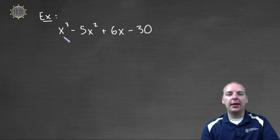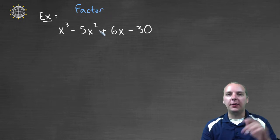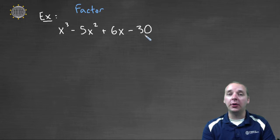Here we're being asked to factor this big polynomial. The first thing I notice is that it has one, two, three, four terms. So immediately I'm thinking let's at least check out factor by grouping.